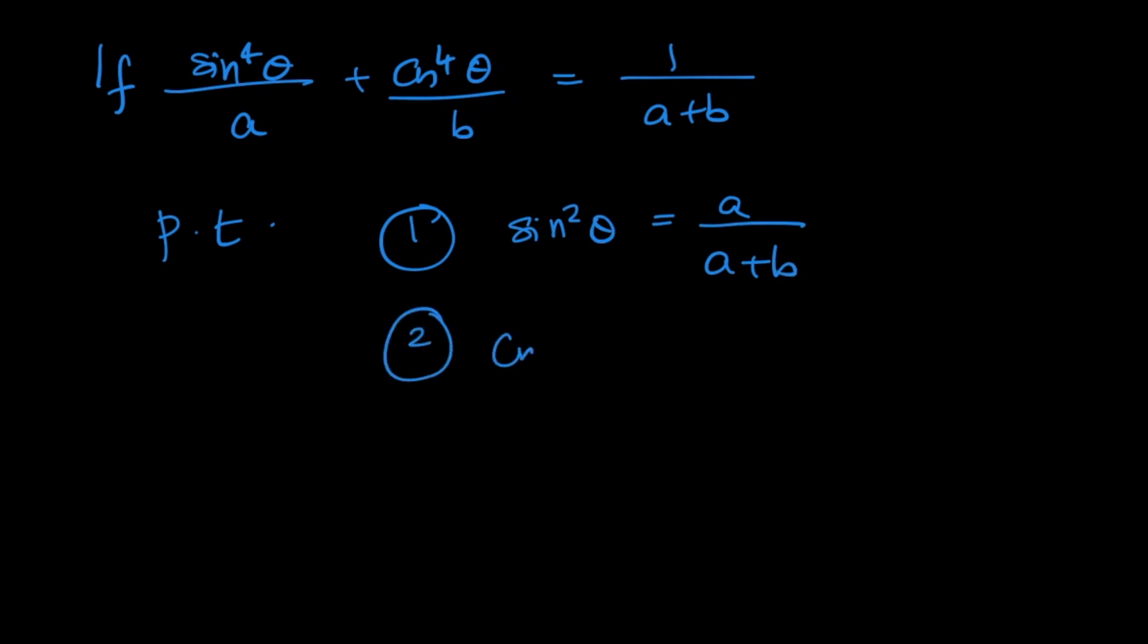Second thing is cos squared theta is equal to B by A plus B and third one is sine raised to 8 theta by A cube plus cos raised to 8 theta by B cube is equal to 1 by A plus B the whole cube.